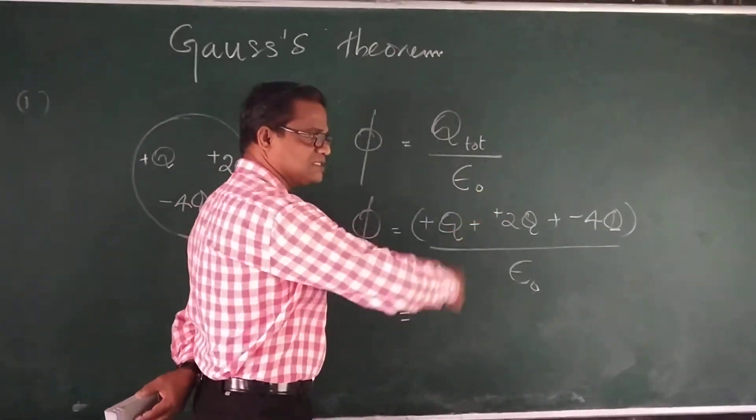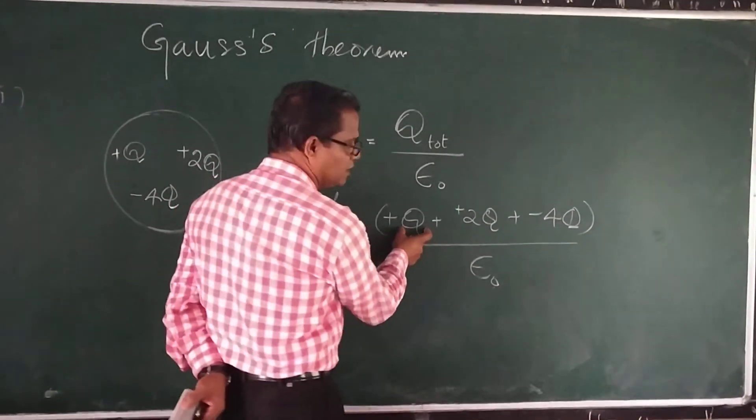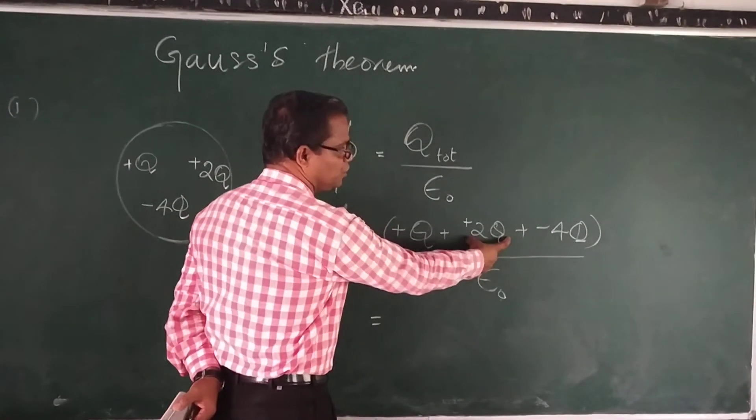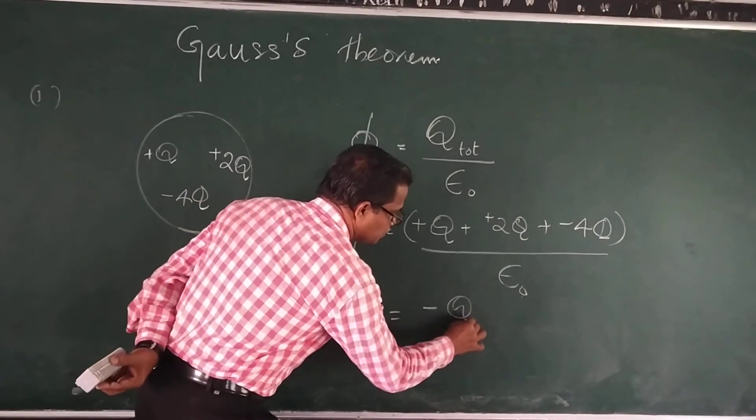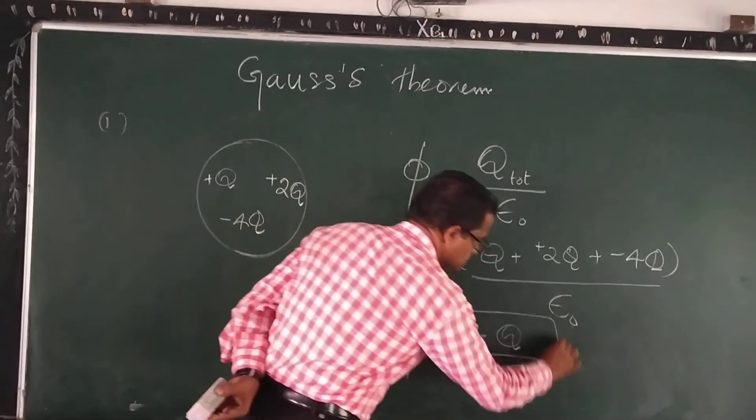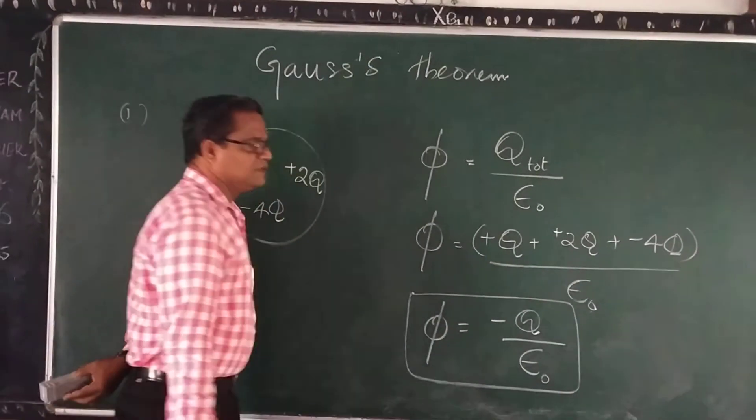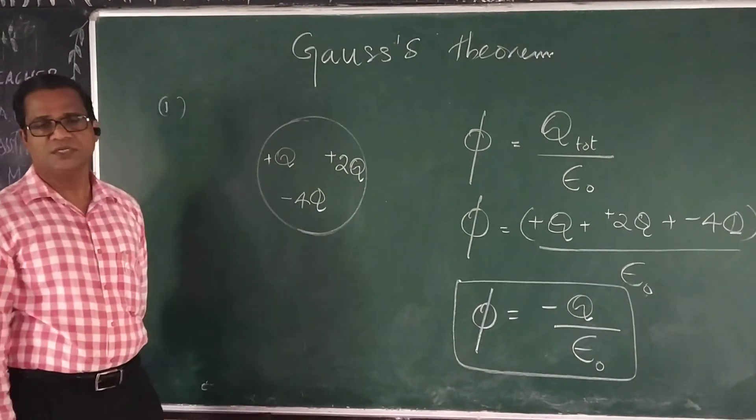Adding all the charges according to number addition and subtraction, we get Q plus 2Q plus 3Q minus 4Q. That is, minus Q remains divided by epsilon 0. So this is the flux linked with that sphere enclosing these charges. Understood? Thank you.